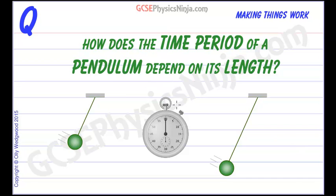How does the time period of a pendulum depend on its length? The time period is the time taken for the pendulum to swing from its highest point to the other side and then back again, swinging through the equilibrium position.